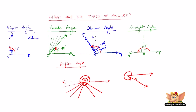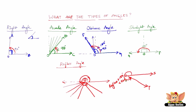Defining reflex angle: a reflex angle is an angle which is greater than 180 degrees and less than 360 degrees. Our reflex angle lies between 180 degrees and 360 degrees. We can name this angle SOT, so angle SOT is a reflex angle, meaning it is greater than 180 degrees and less than 360 degrees.